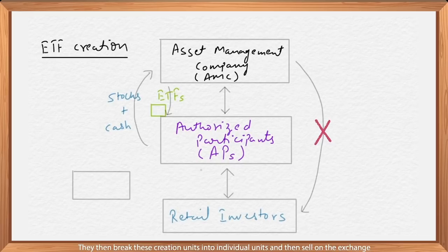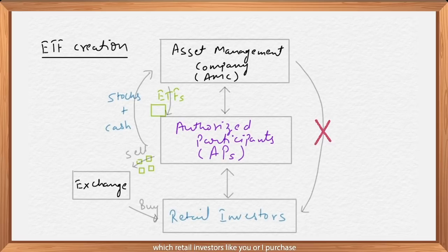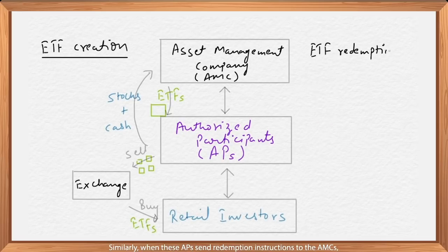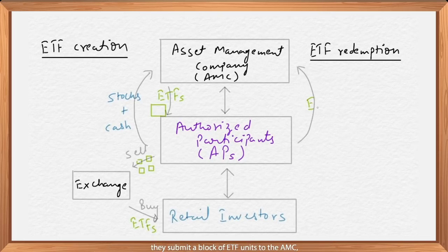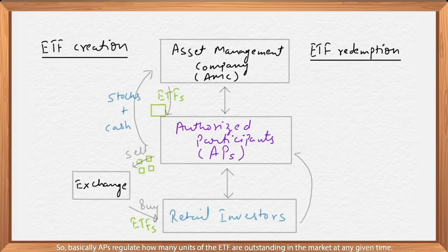APs then break these creation units into individual units and sell them on the exchange, which retail investors like you or I purchase. Similarly, when APs send redemption instructions to the AMC, they submit a block of ETF units to the AMC, and in return they get the underlying stocks. So basically, APs regulate how many units of the ETF are outstanding in the market at any given time.